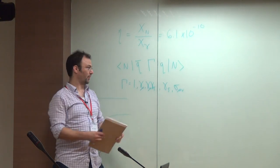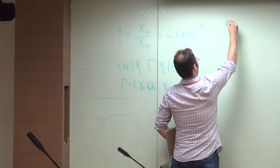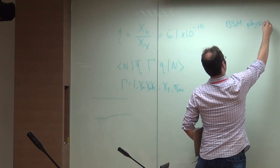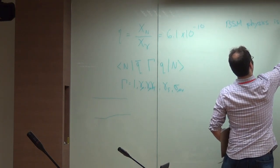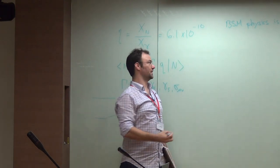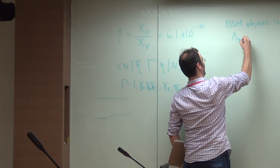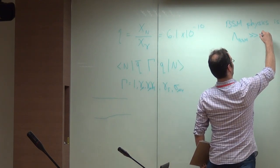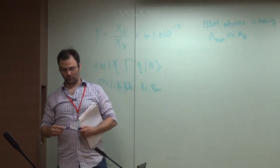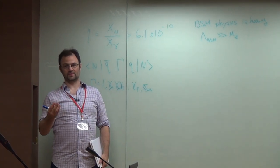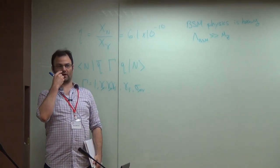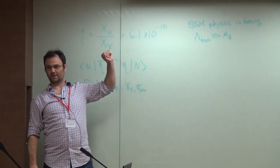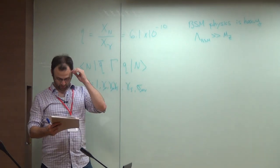Starting from the paradigm that BSM physics is heavy — meaning it exists at some scale lambda BSM much greater than the mass of the Z — you can integrate out this heavy field through standard effective field theory techniques that Wilson taught us, and treat this BSM physics through local operators with standard model fields.